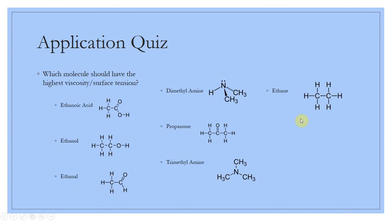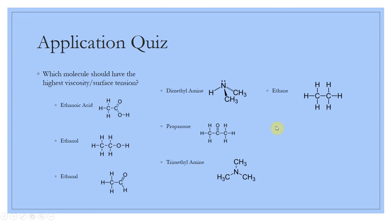Starting with ethane: it's a nonpolar molecule with only London dispersion forces, so it's going to have the lowest viscosity and surface tension. Next, things like trimethylamine and propanone have a dipole but no hydrogen bonding — these have medium surface tension and viscosity. Then, ethanol, ethanoic acid, and dimethylamine have hydrogen bonding plus dipole and London dispersion forces — these should have the highest viscosity and surface tension. It all comes back to those intermolecular forces.